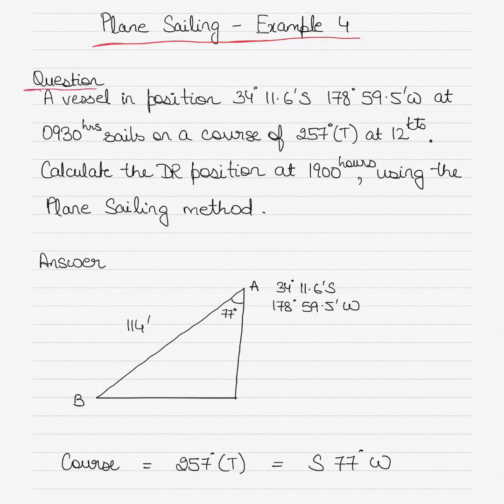As you probably know, plane sailing is used when distances involved are less than 600 nautical miles. It assumes that the earth is flat — the curvature of the earth is not taken into account — and courses can be drawn as straight lines.